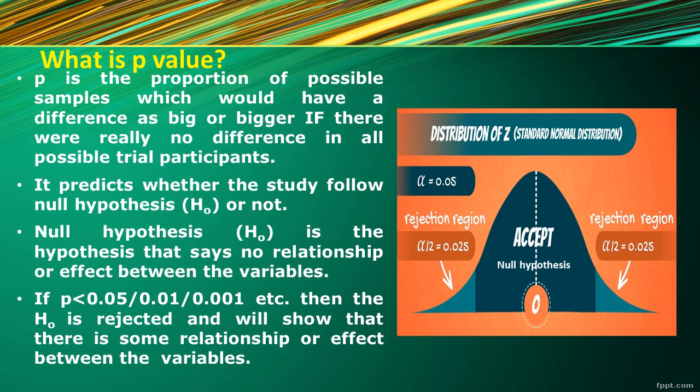The p-value is used to predict the correctness of the null hypothesis. The null hypothesis states that there is no effect or relationship between variables. But if the p-value is significant, it means there is a significant difference, and the null hypothesis will be rejected, predicting that there is some effect or relationship between variables. In the figure, the acceptance region of the null hypothesis is in the center, while the tail regions are alpha 0.025 on each side, making the total alpha 0.05 — the rejection region.